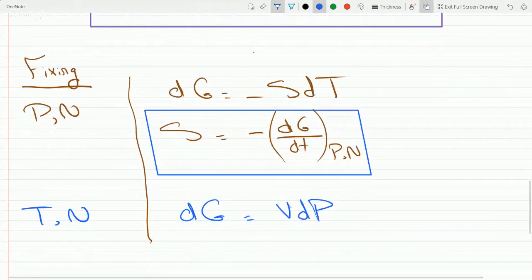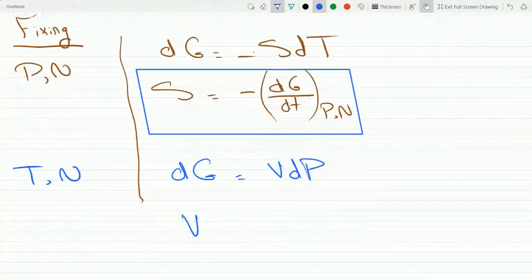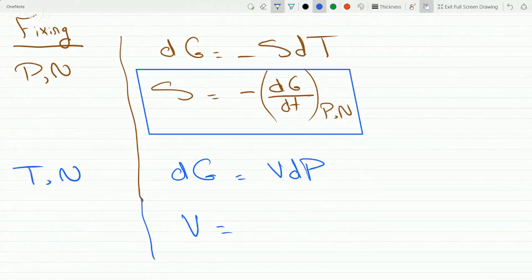which means V will equal dG over dP at constant T and N.